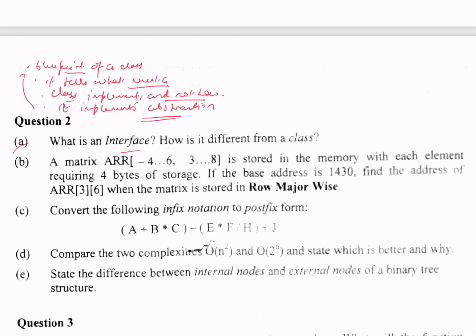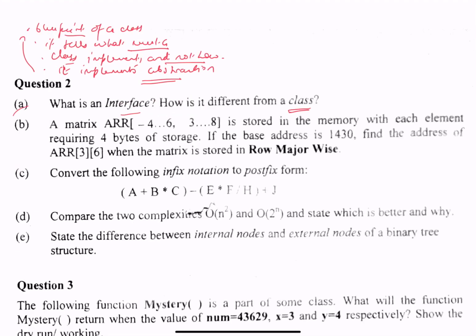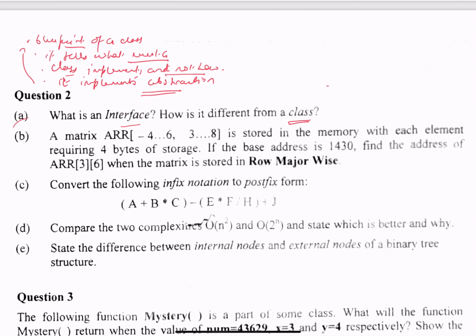I hope my writing is clear. Blueprint, it tells what a class must implement and not how, and then it implements abstraction. How is it different from a class? You can write certain points. For example, you can instantiate a class but not an interface.